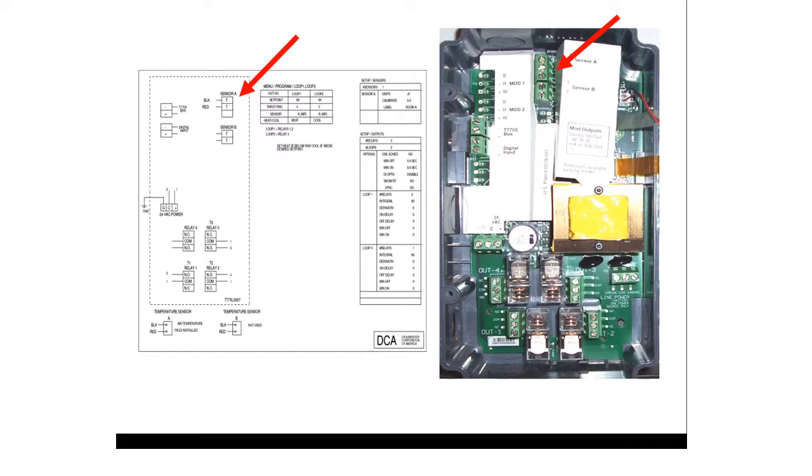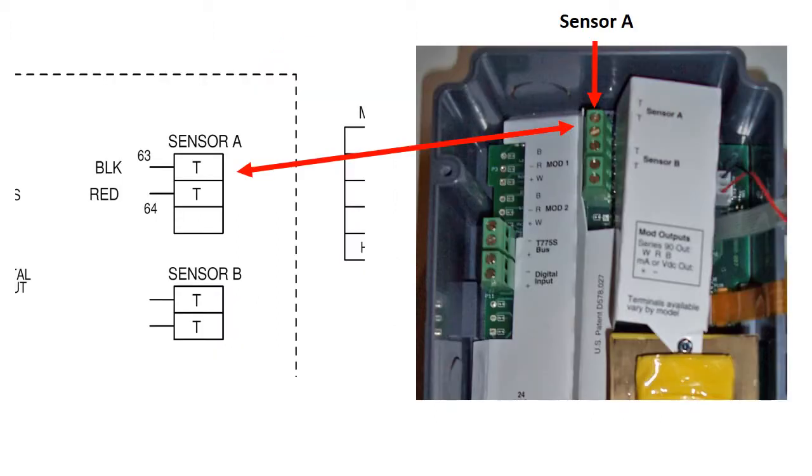Sensor wiring on this example involves sensor A only. The two sensor wires are connected to the top two terminals of sensor A on the controller.